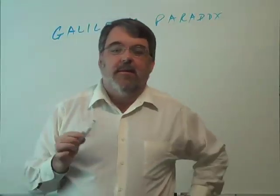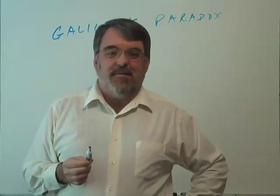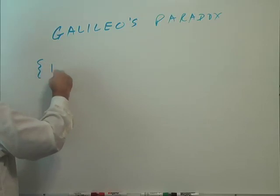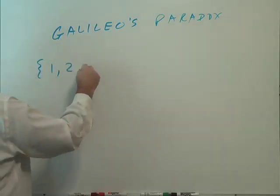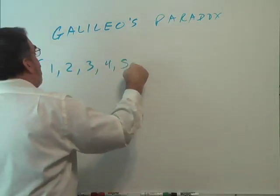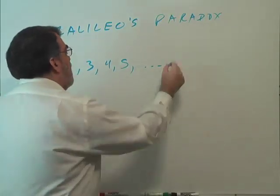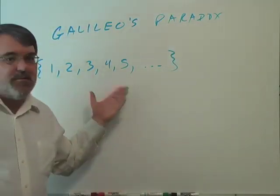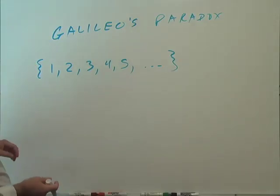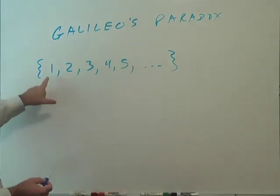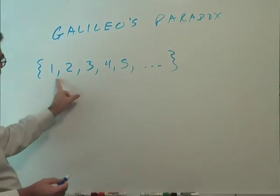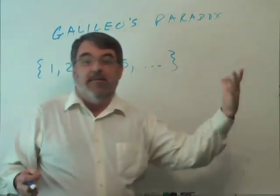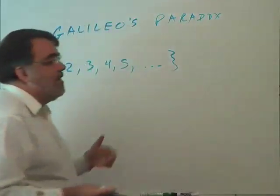Alright, so here's what he observed. He said, okay, let's take the counting numbers. The counting numbers are the numbers beginning with one, the whole numbers: 1, 2, 3, 4, 5, and so on. Mathematicians call these the natural numbers, the counting numbers. The little three dots means that this pattern goes on forever. So this set is infinite in size. It has infinitely many numbers.